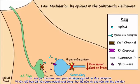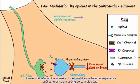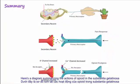So now you can see how opioids, acting as agonists on mu-receptors in the substantia gelatinosa of the spinal cord, leads to a disruption in pain signals, ultimately decreasing the intensity of the painful experience.